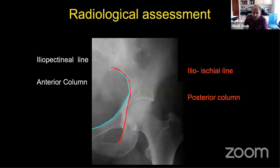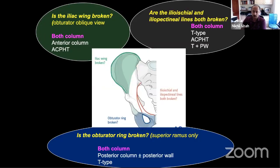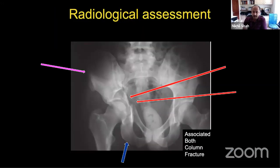Sometimes the posterior column fracture can be quite low, segmental, or associated with a posterior wall fracture, and in some cases the part of the greater sciatic notch attached to the sacroiliac joint can itself be fractured, potentially causing sciatic nerve damage. The ilioischial and iliopectineal lines represent the posterior and anterior columns on plain radiograph. Three key questions help identify an ABC on AP X-ray: Is the iliac wing broken? Are both the iliopectineal and ilioischial lines broken? And is the obturator ring broken? If yes to all three, you likely have an associated both column fracture.